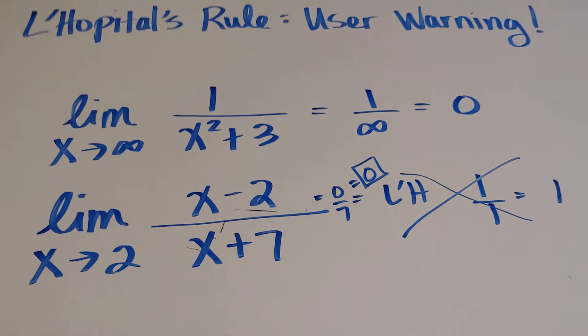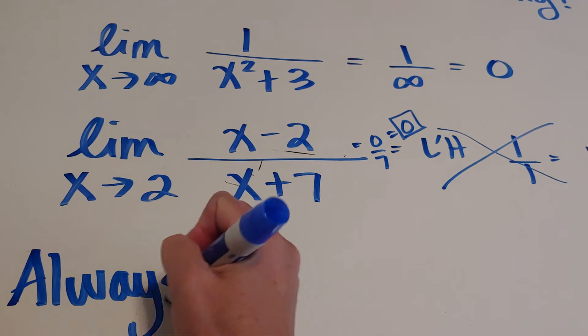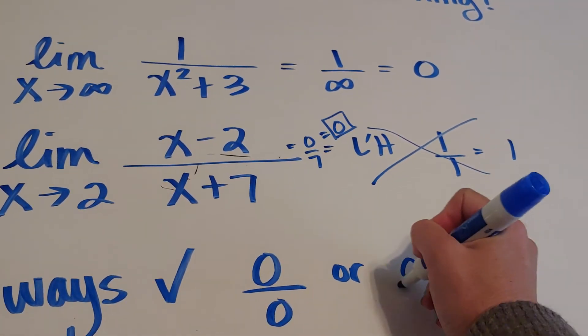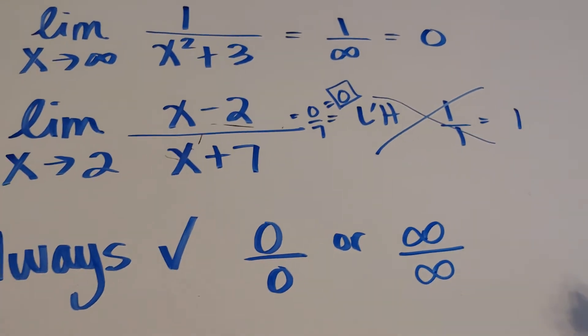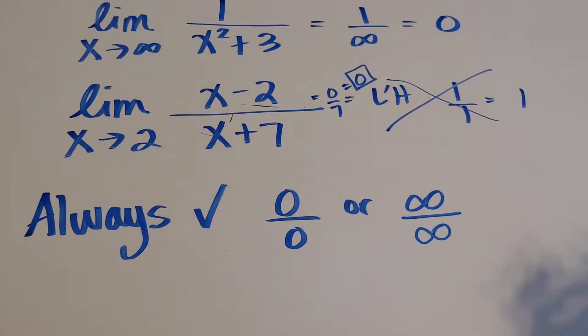So your goal is to always, always check you have 0 over 0 or infinity over infinity. If you don't, you can't use it. That's the only time you could use it.